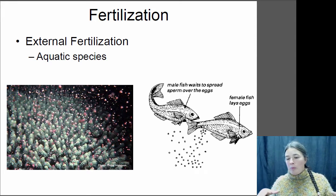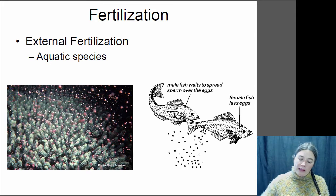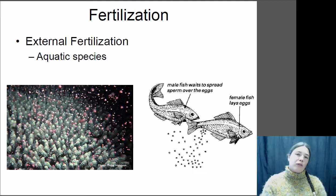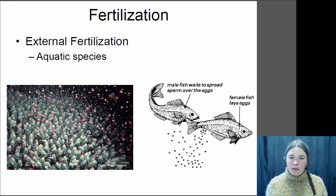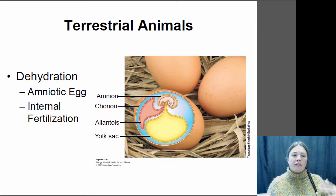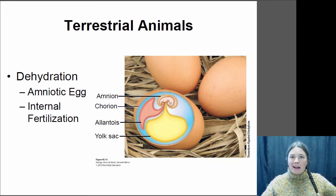Other things have a little bit more directed reproduction but it's still external fertilization. A lot of fishes: the female will lay her eggs and then the male will swim over them and release sperm to fertilize the eggs outside of the body of the female. External fertilization is very common in aquatic species. In terrestrial species you have a problem because you have to deal with dehydration of the sperm and the eggs — you can't just release things into a terrestrial environment and expect them to find each other.